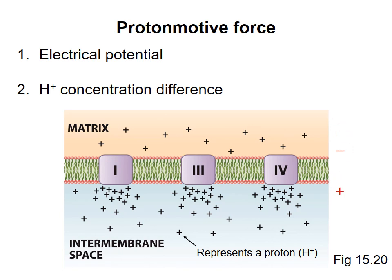The second component of the proton motive force is the proton concentration difference across the membrane. If given a pathway, for example through a channel, protons would spontaneously move from the intermembrane space into the matrix because particles diffuse from an area of high concentration to an area of low concentration.